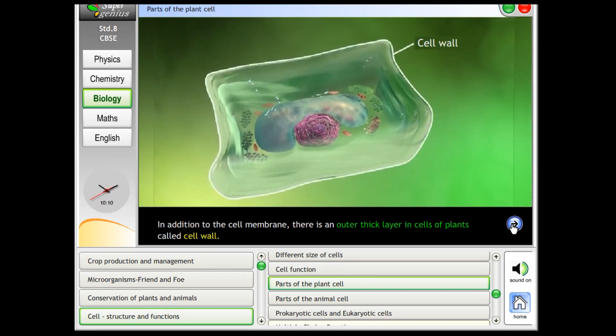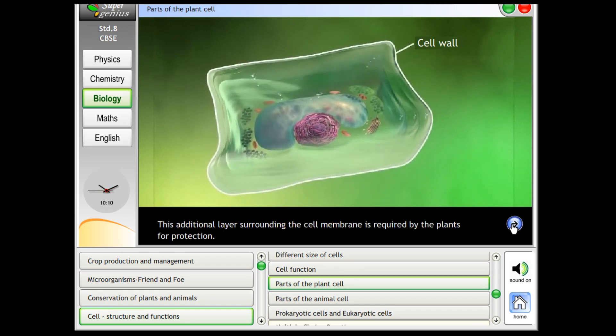In addition to the cell membrane, there is an outer thick layer in cells of plants called cell wall. This additional layer surrounding the cell membrane is required by the plants for protection.